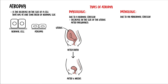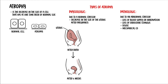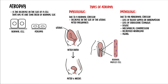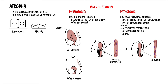Specific types of loss of stimulus include loss of blood supply or innervation, loss of endocrine stimulus, disuse, mechanical compression, decreased workload, or aging. Here is an example of atrophy of skeletal muscle because of disuse or aging.